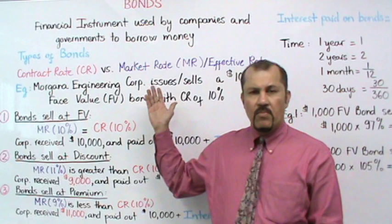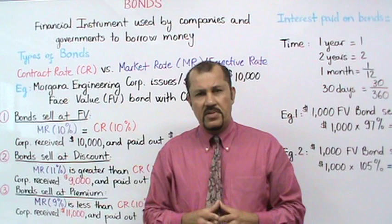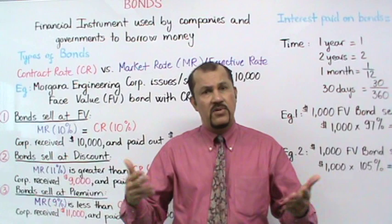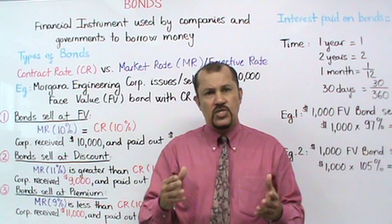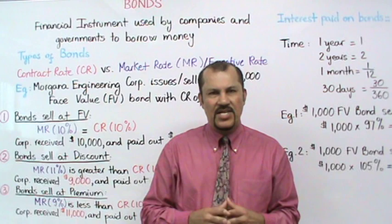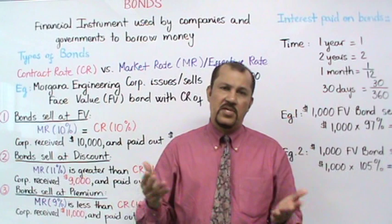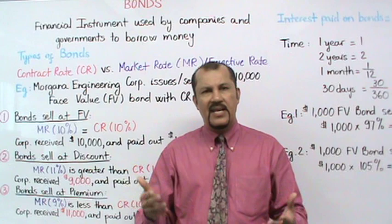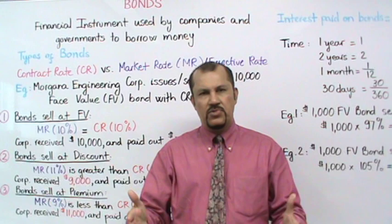When it comes to bonds, think of a bond as a piece of paper that gets sold. On that piece of paper there's a dollar value attached — that's what we refer to as a face value. Another component would be language about a bond term, let's assume five years. Then you have an interest rate attached to that bond, called the contract rate or the stipulated rate. So let's assume Morgana Engineering sells a bond with a face value of $10,000, a bond term of five years, and a contract rate of 10%.